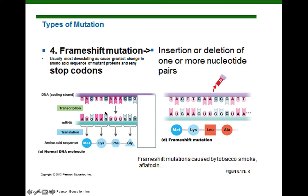Here is our wild-type DNA and how it would be transcribed into mRNA. We see the reading frame established by the first AUG start codon. Here's our first codon, AUG, translated into methionine. The second codon, AAG, is translated into lysine. The third codon is translated into phenylalanine, and the fourth codon is translated into glycine.